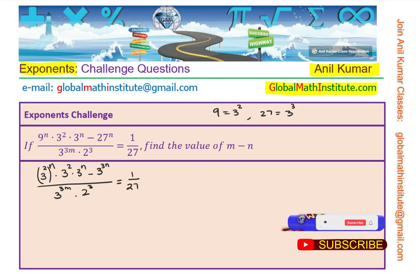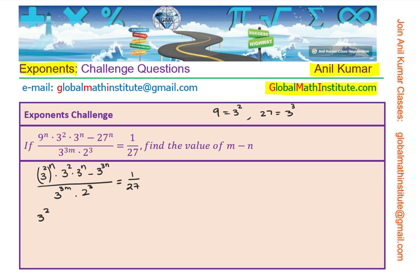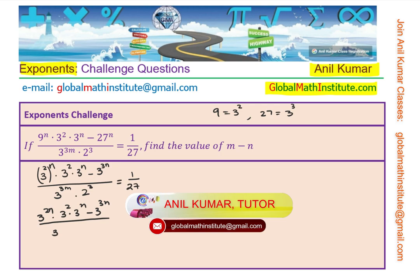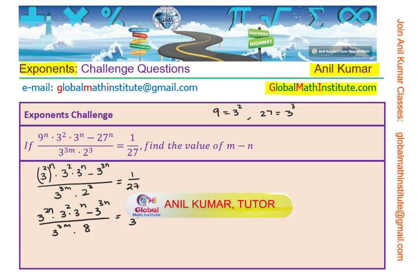We have 1 over 27 on the right-hand side. Now 3 to the power of 2 to the power of n means 3 to the power of 2n. So let's rewrite this as 3 to the power of 2n times 3 squared, which is 9, times 3 to the power of n, minus 3 to the power of 3n, over 3 to the power of 3m. And let me write 2 cubed as 8. On the right side, 1 over 27 we can write as 3 to the power of 3.